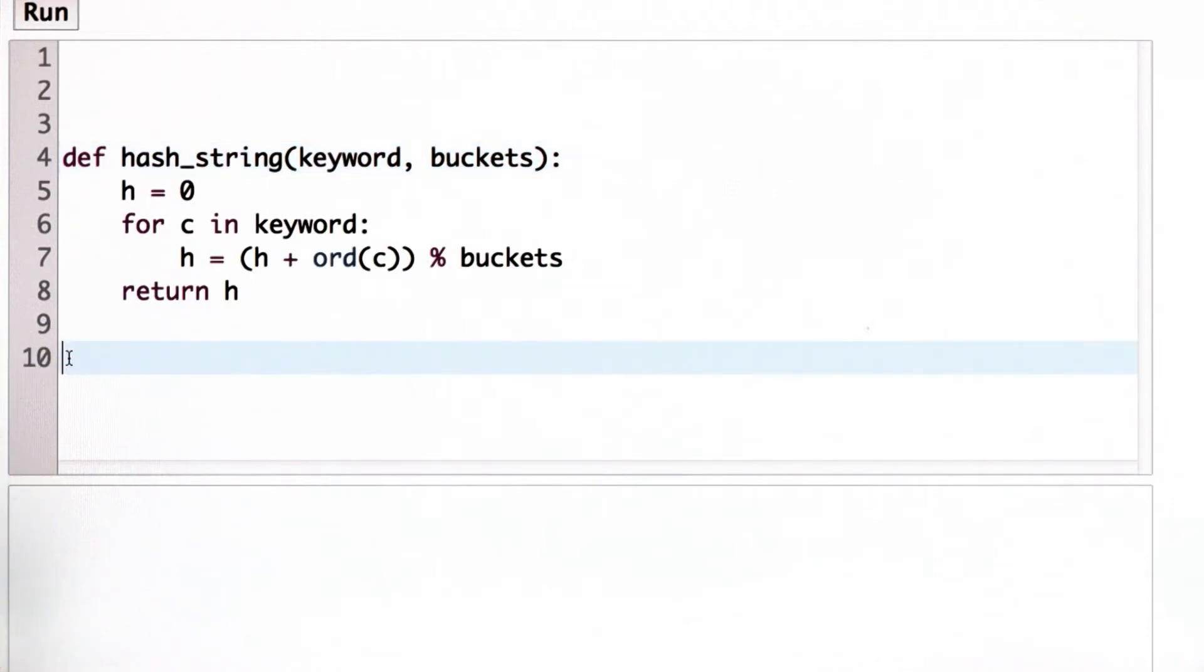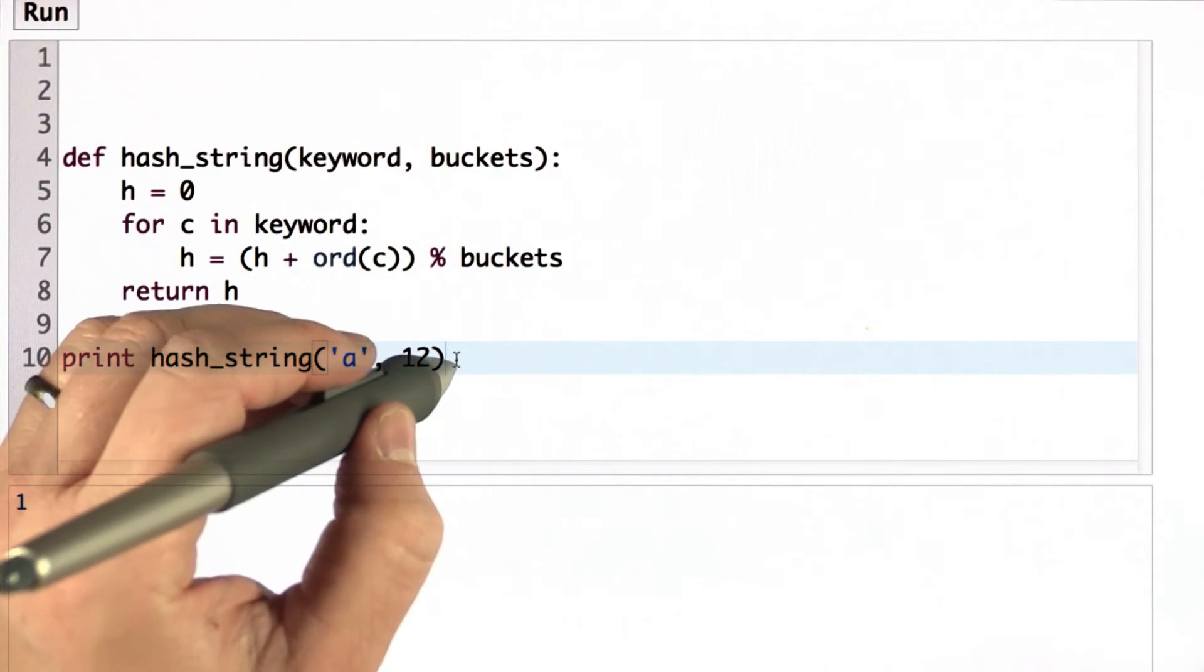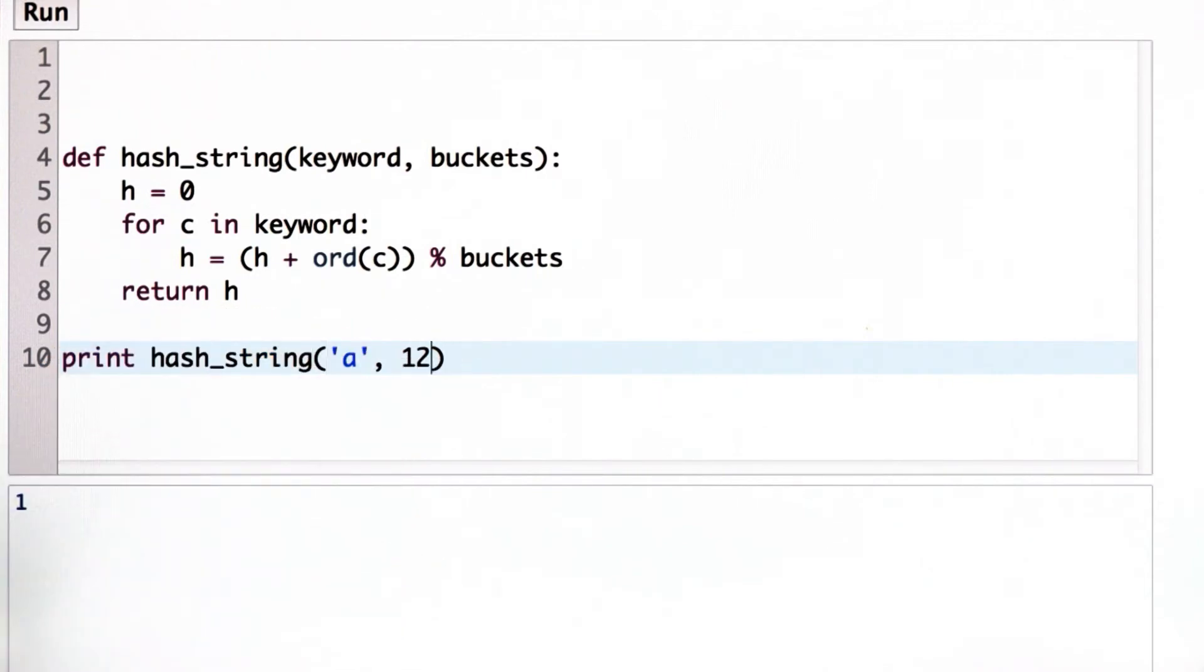So let's try the example. So A, with 12 buckets, hashes to bucket 1 as we expect. And if we look at B, it hashes to bucket 2 also as we expect.